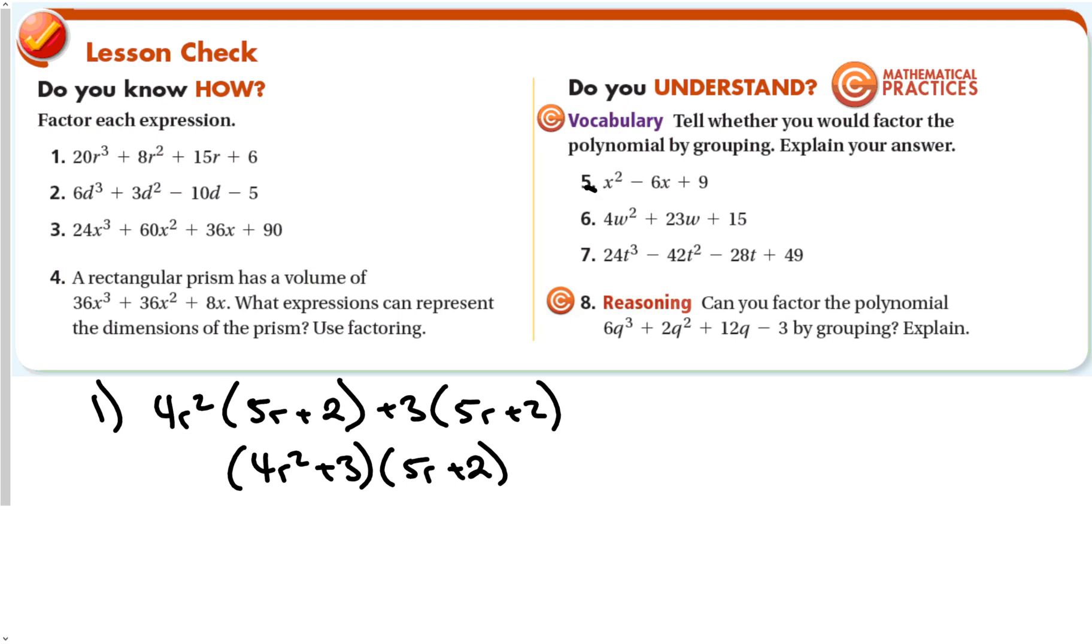Let's jump right over to number five. Tell whether you would factor the polynomial by grouping. No. Why not? It only has three terms, and we have an x squared. Why not just find the factors of nine that add up to six?